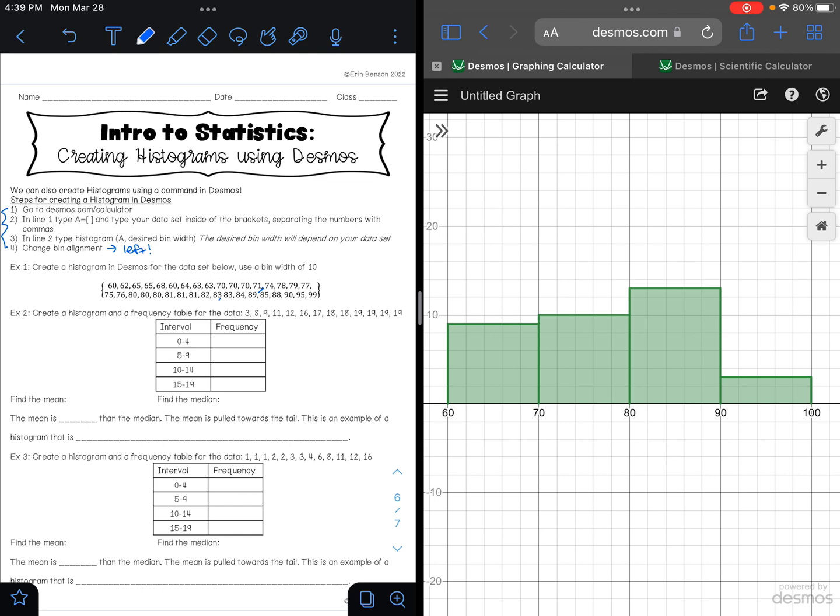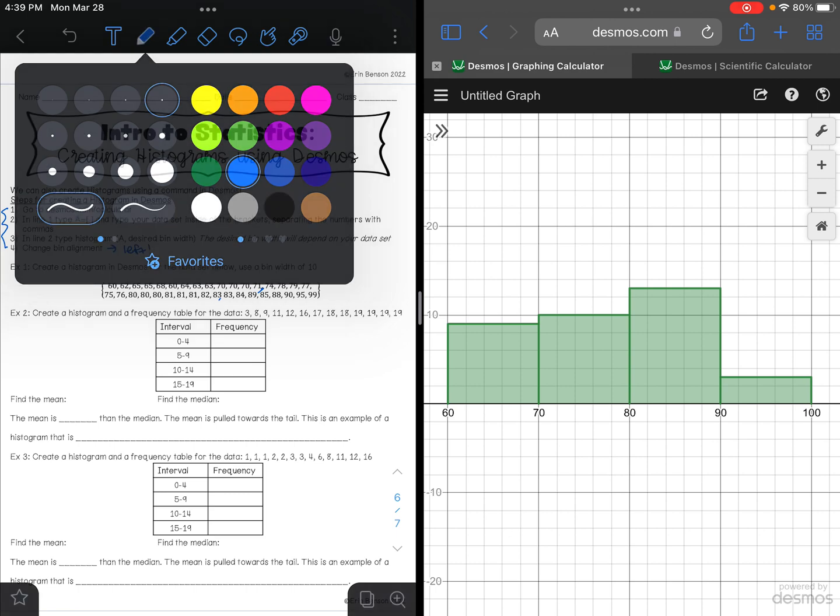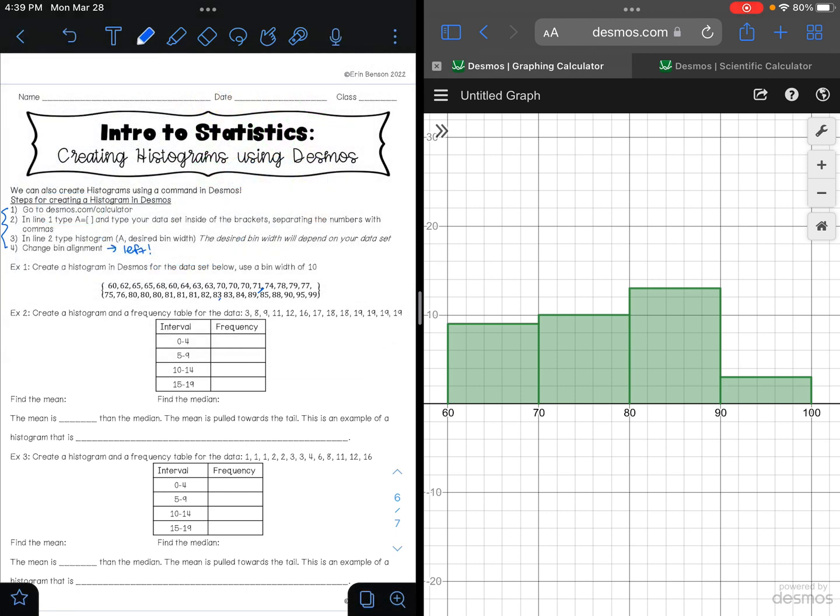If we look at example 2, it says create a histogram and a frequency table for the data, and then we have a frequency table there. So let's go ahead and do the frequency table first. Our interval is between 0 and 4, so between 0 and 4 I have 1 data value. Between 5 and 9 I have, let's see, I don't want to cross that out because I want to be able to see it later. Between 5 and 9 I have 1, 2.